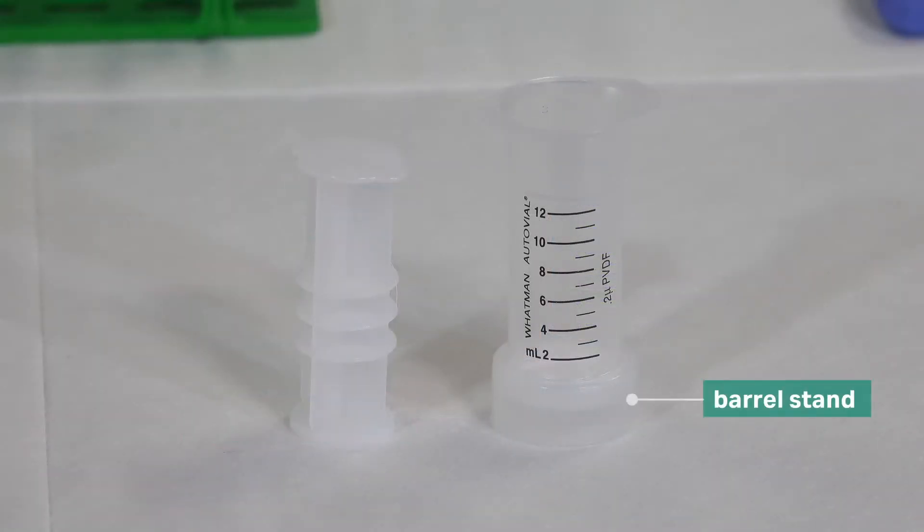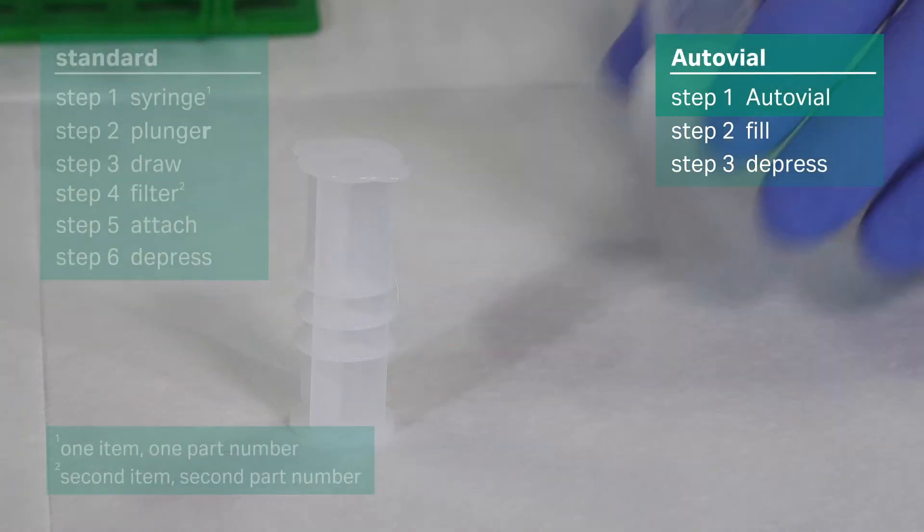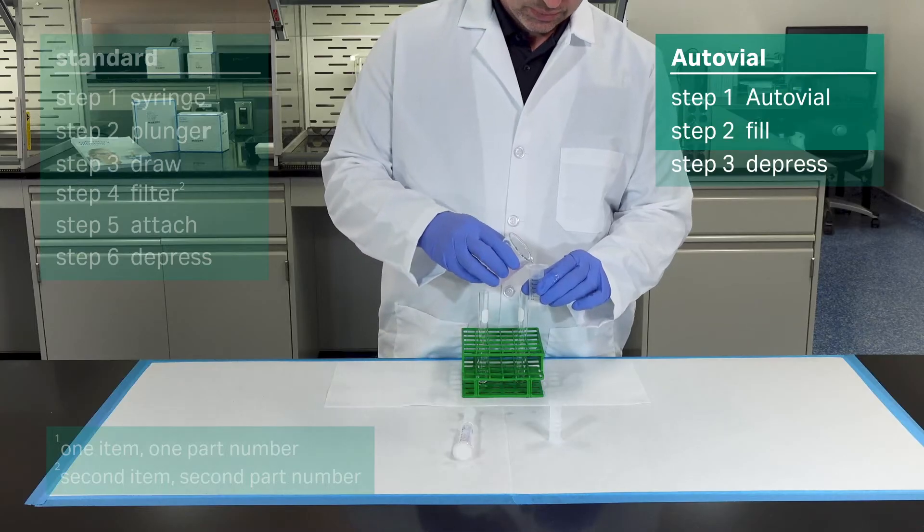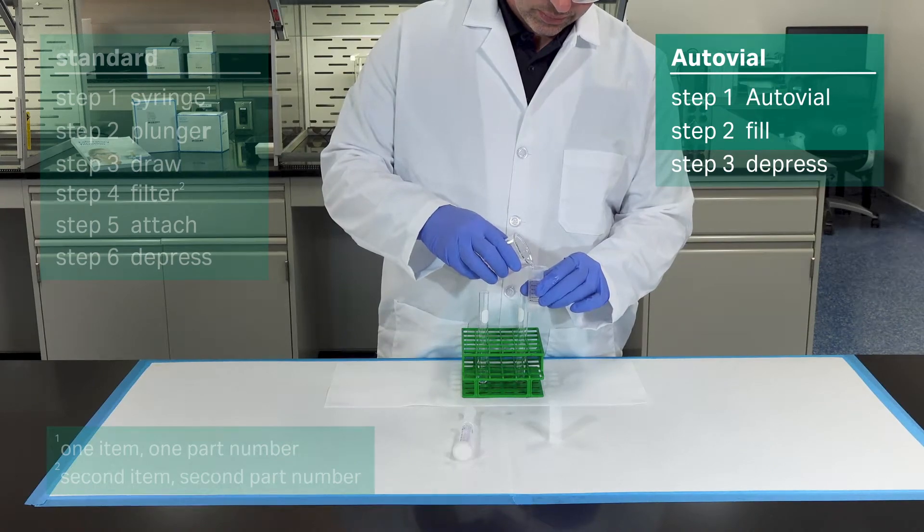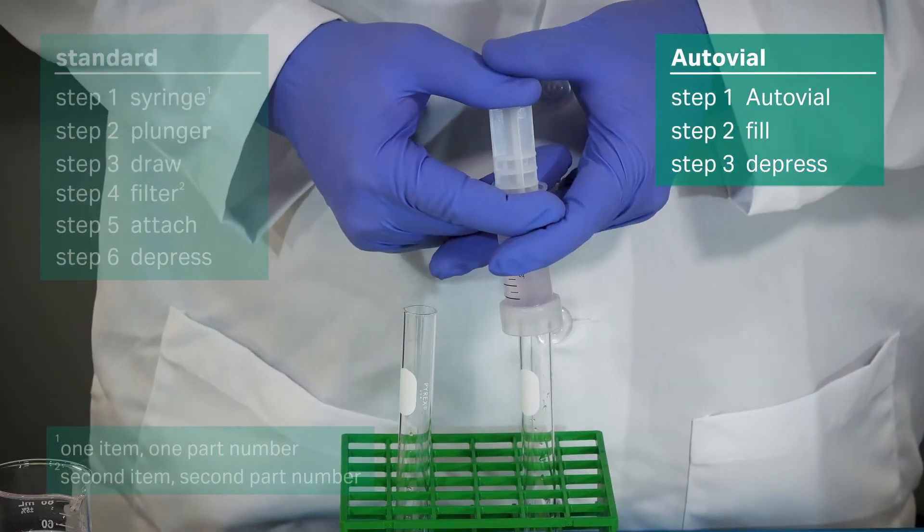It even comes with a handy barrel stand for convenience. Okay, let's start. Retrieve the AutoVial and fill it with your sample. Now depress the plunger, filtering the sample.